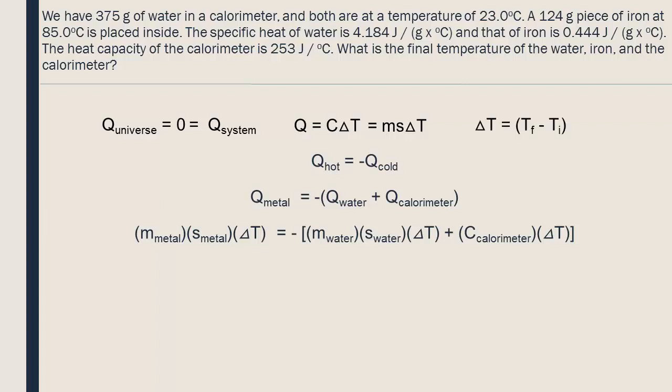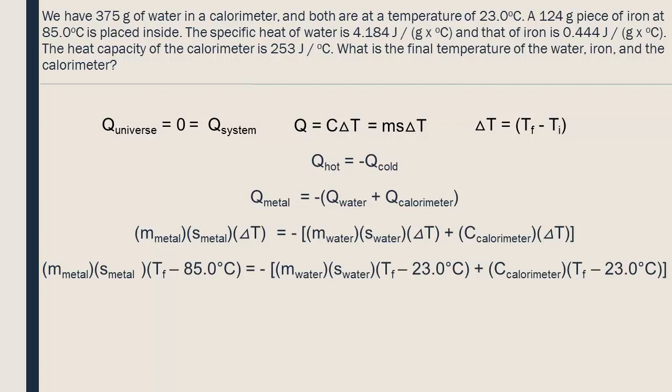The change in temperature, delta T, is equal to the final temperature minus the initial temperature. We insert the values for the initial temperature into our equation, and we leave the final temperature as a variable for which we will solve.